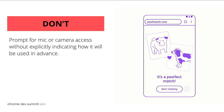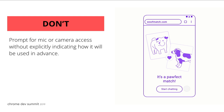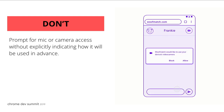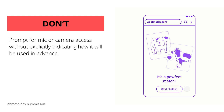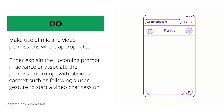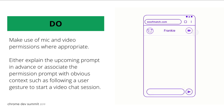Please don't prompt for mic or camera access without explicitly indicating how it's going to be used in advance. Do make use of mic and video permissions where appropriate — either explain the upcoming prompt in advance, or associate the permission prompt with obvious context, such as following a user gesture to start a video or chat session.